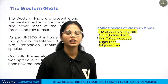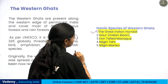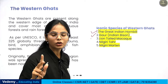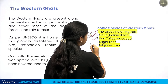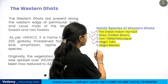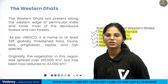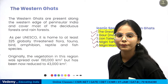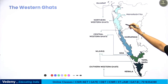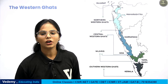Western Ghats is another important hotspot. The iconic species of Western Ghats include the great Indian hornbill. Western Ghats covers South India — including Goa, Karnataka, Kerala, Andhra Pradesh, and Tamil Nadu. It also extends to Sri Lanka.